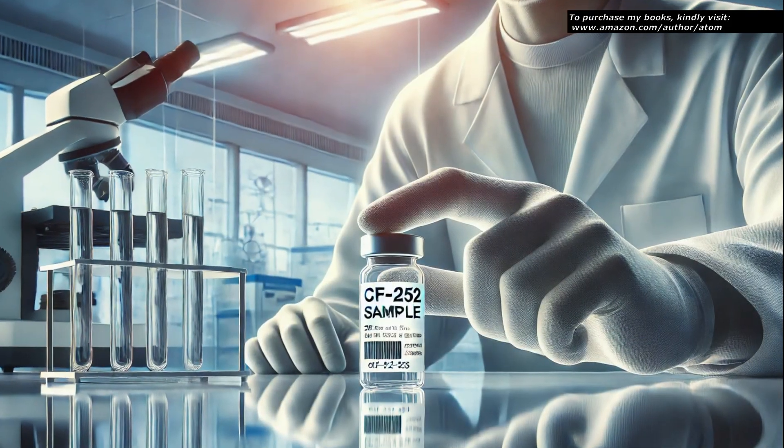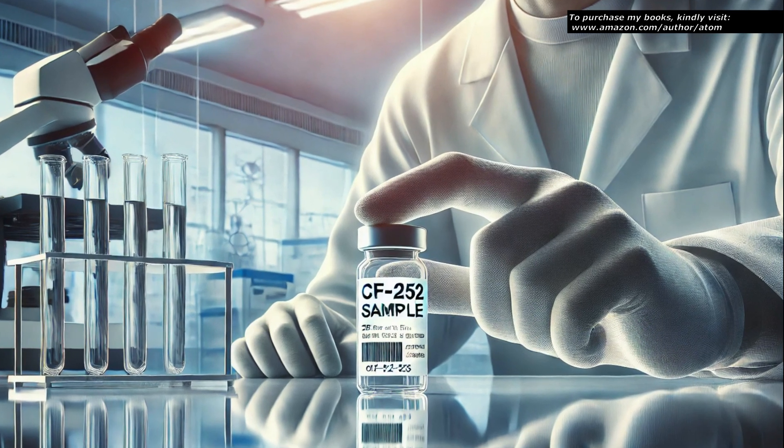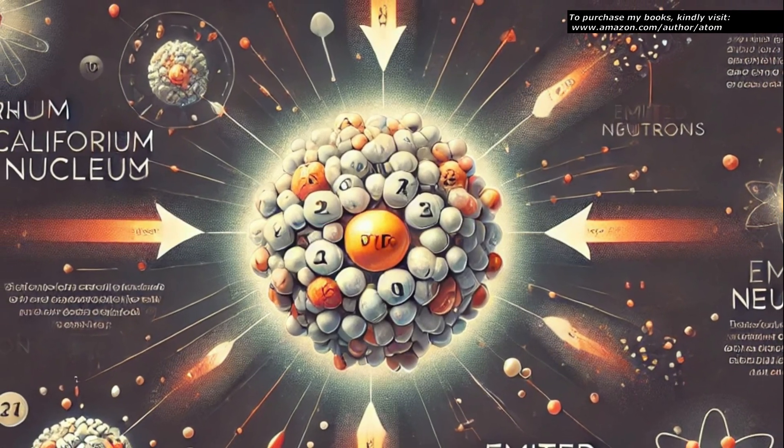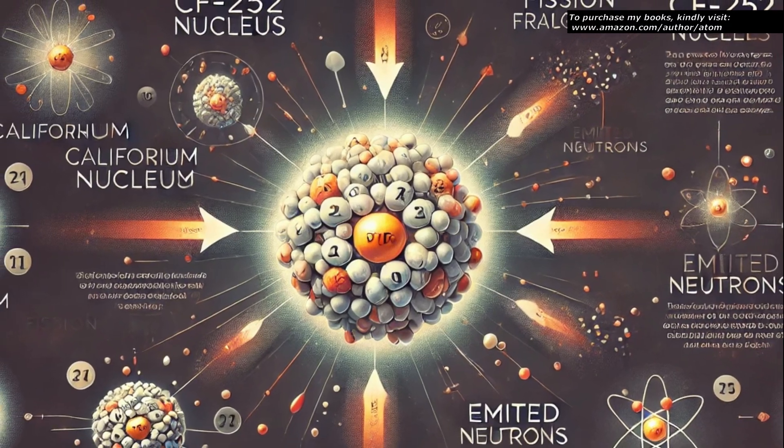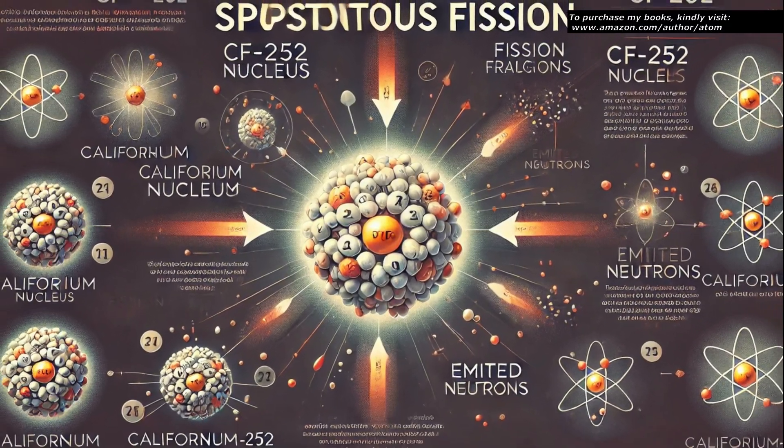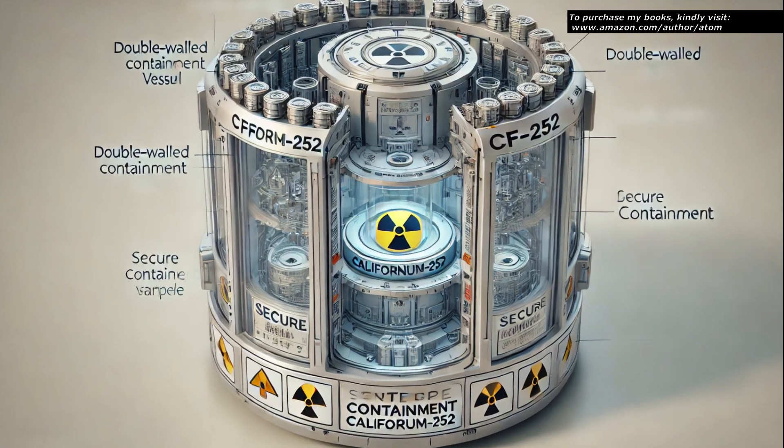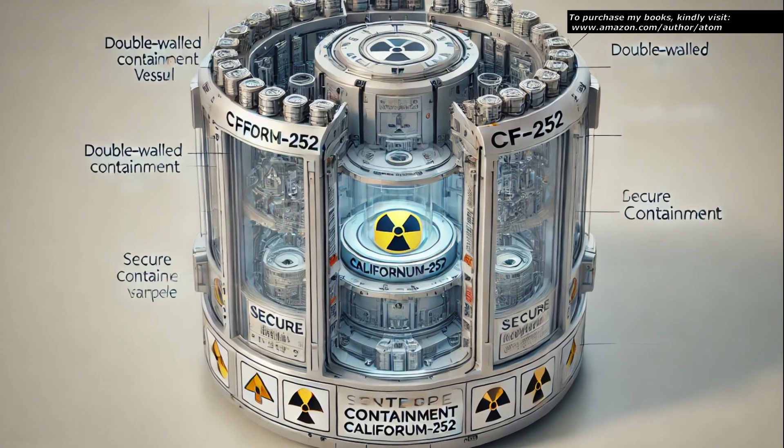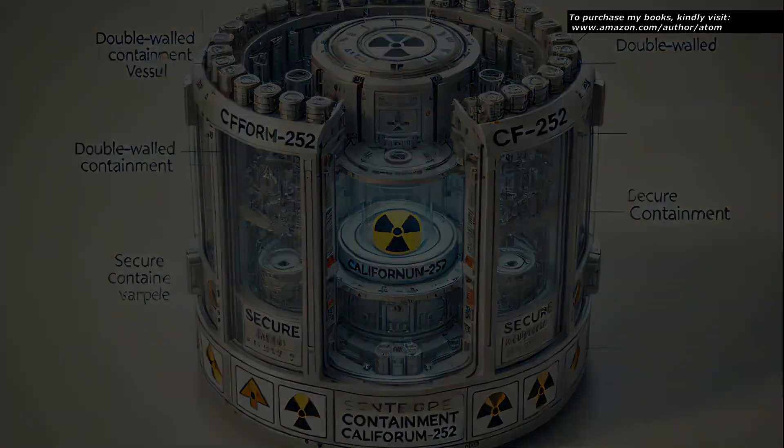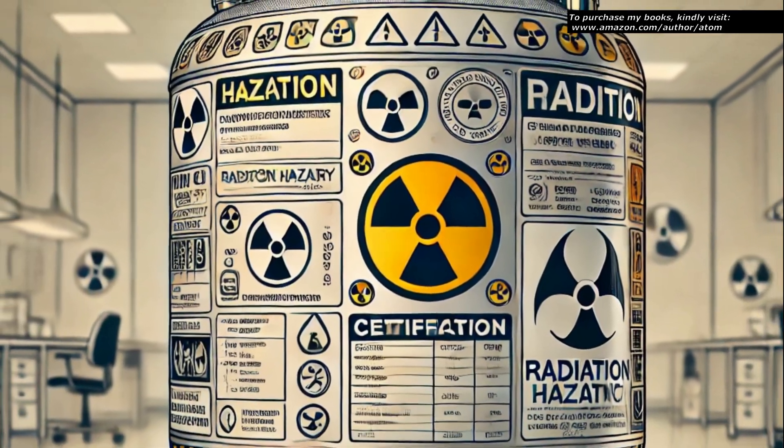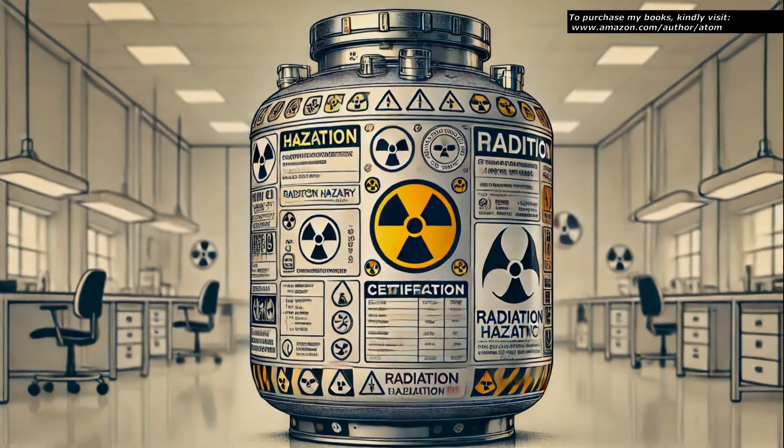To begin, a sample of CF-252 is carefully prepared. This isotope is known for its ability to undergo spontaneous fission, emitting neutrons and fission fragments. The sample is securely encapsulated within a double-walled containment vessel to ensure safety and prevent any contamination. The vessel complies with all regulatory standards for handling radioactive materials.